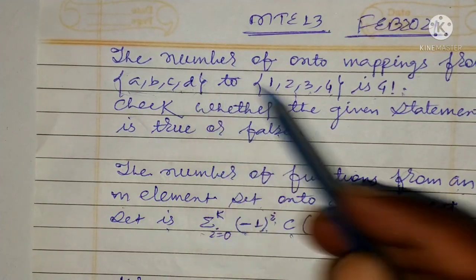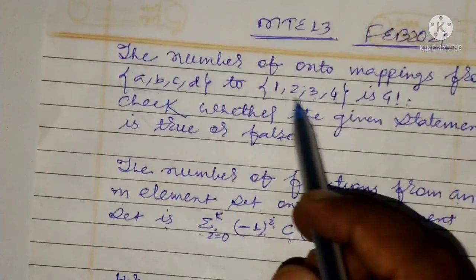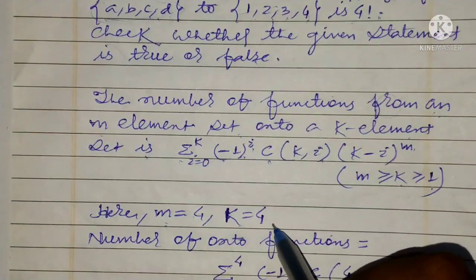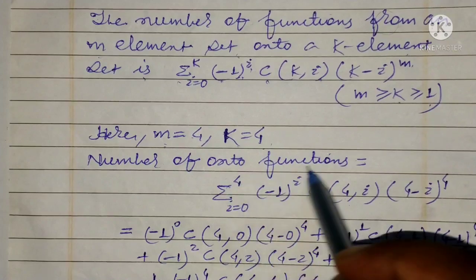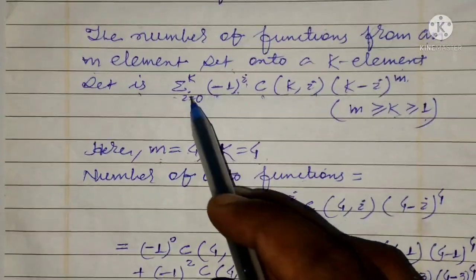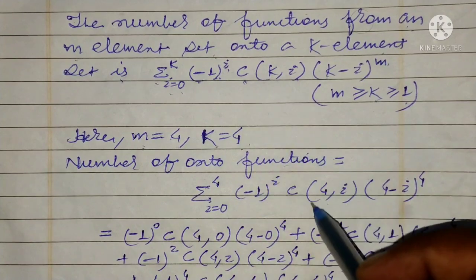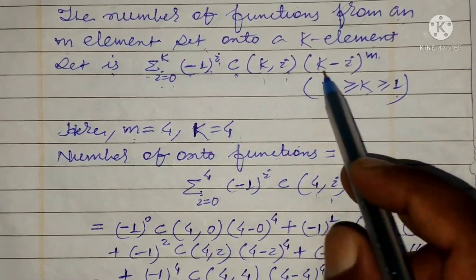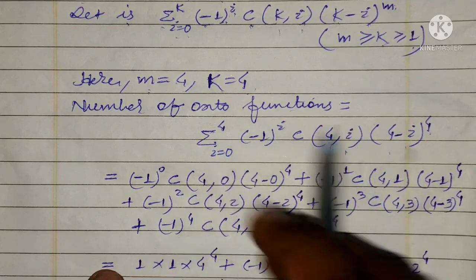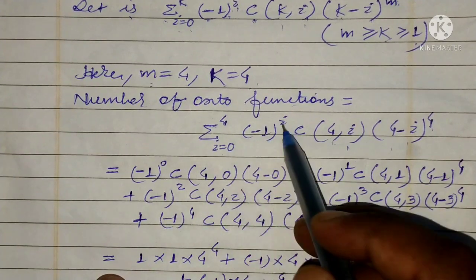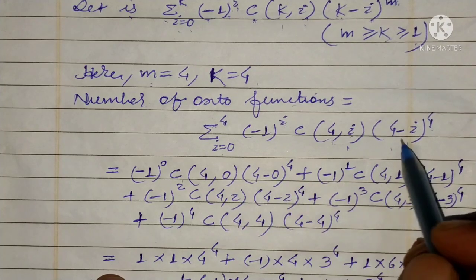This set has 4 elements and this set also has 4 elements. The number of elements in the first set is m, and the number of elements in the second set is k. So we will find the number of onto functions using the formula: summation i=0 to k, where k=4, of (-1)^i times C(4, i) times (4 - i)^m, where m=4. We take different values of i and add them. First, taking i=0: (-1)^0 times C(4,0) times (4-0)^4.